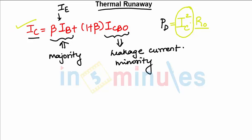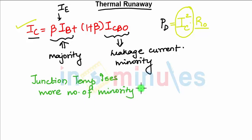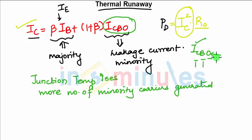Now if the junction temperature increases, more number of minority carriers is generated. So if the number of minority carriers is increasing, it will increase ICBO. ICBO is collector to base current with emitter open. So if the minority carriers increase, the leakage current increases, and your ICBO will increase.